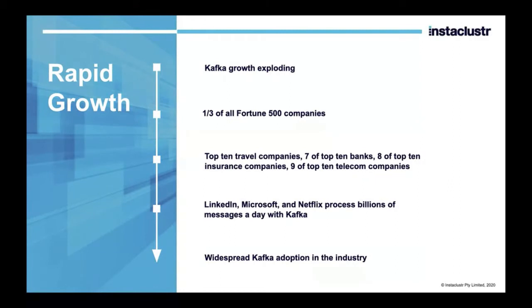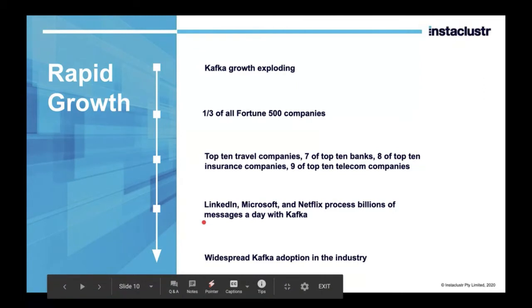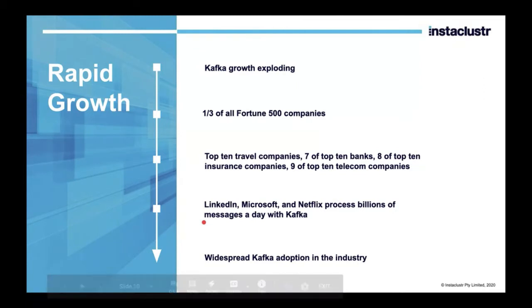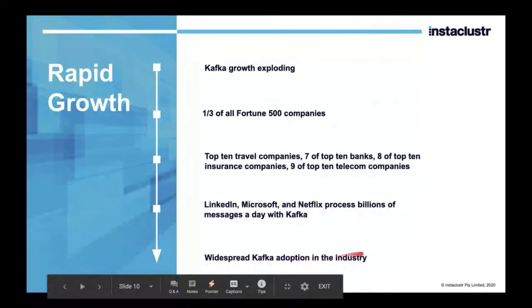Ever since Kafka was introduced, it has seen very rapid growth and acceptance from the industry. One third of all Fortune 500 companies use Kafka — top 10 travel companies, 7 out of top 10 banks, 8 out of top 10 insurance companies, and 9 out of top 10 telecom companies already use Kafka. Examples include LinkedIn, Microsoft, and Netflix, which have very big deployments of Kafka and process billions of messages per day. This has resulted in widespread Kafka adoption in the industry.